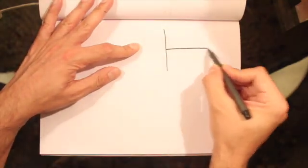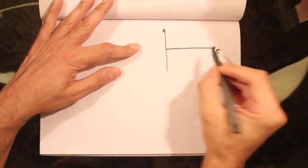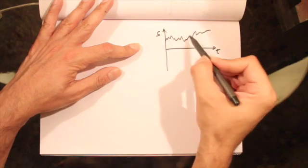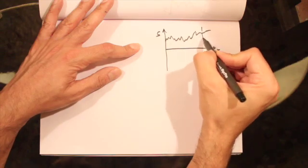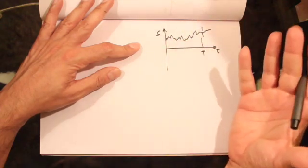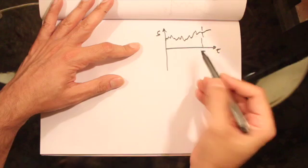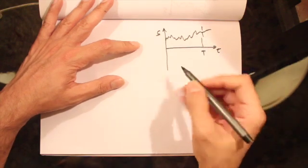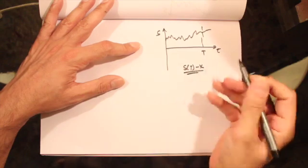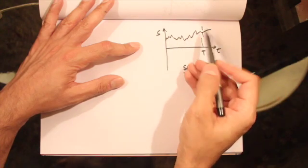If we have the underlying asset as a stock, with time on one axis and the price of the stock on the other, let's assume the stock takes some random path. Let capital T be the expiration of the option. For a European call option, we can only exercise at expiration, and the payoff at expiration is going to be S(T) minus K.